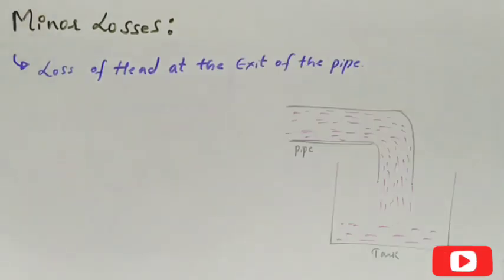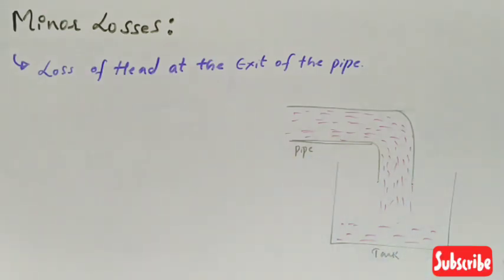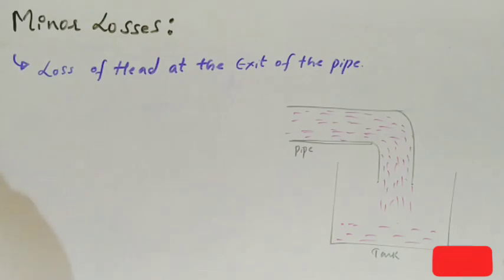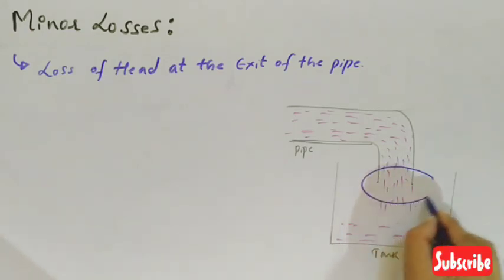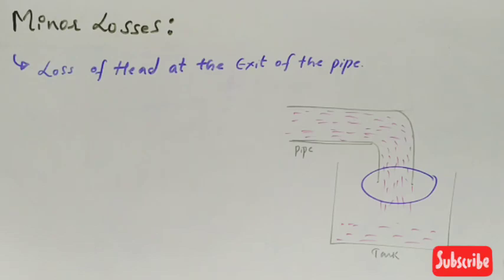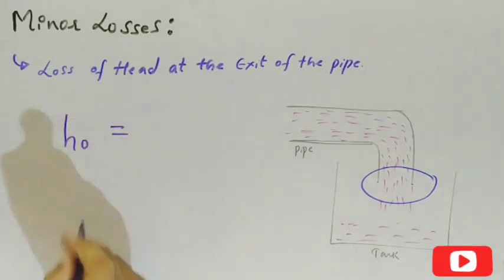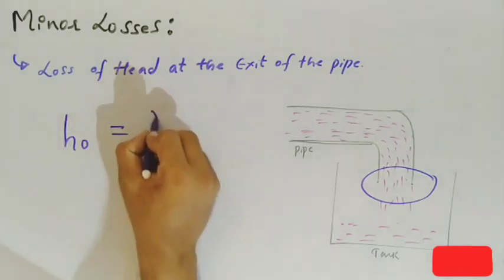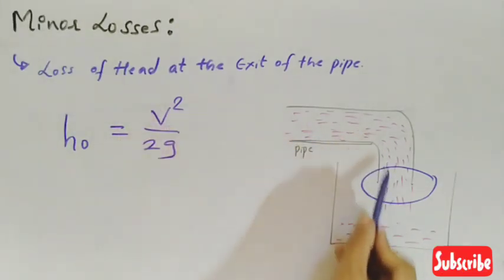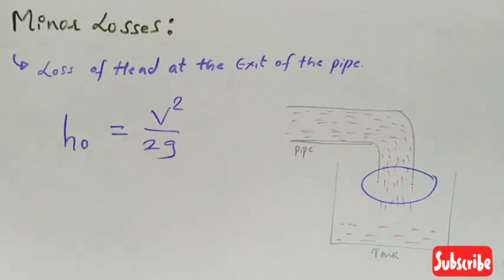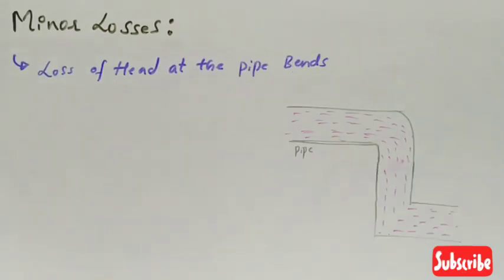The next type of minor loss is the loss of head at the exit of a pipe. This loss is observed when the velocity of the liquid at the outlet of the pipe is dissipated either in the form of a free jet or it is lost in the tank. This loss is denoted by h_o and is given by: h_o = v² / 2g, where v is the velocity of the fluid and g is the gravitational constant.